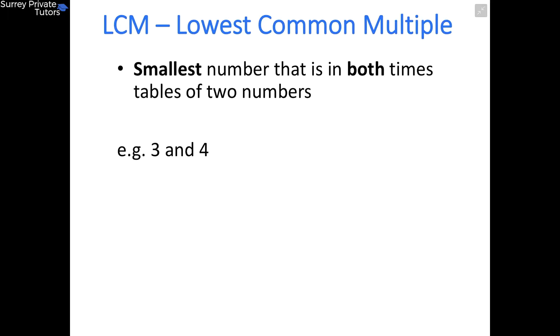In this section we're going to look at the lowest common multiple of two separate numbers. This is the smallest number that is in both the times tables of the two numbers.